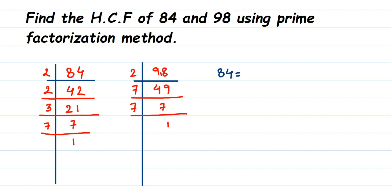So 84 can be written as all the factors we got: it's 2 × 2 × 3 × 7. And 98 can be written as all the factors again: it's 2 × 7 × 7.